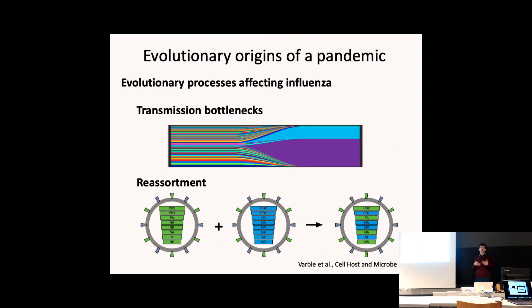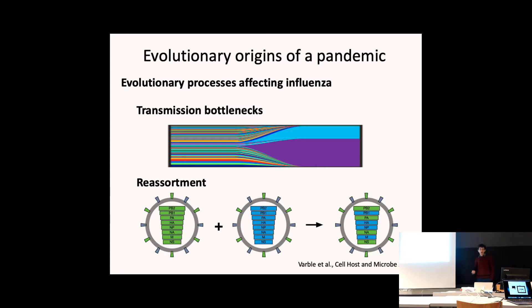Just like a human has chromosomes containing genetic information, the flu virus has eight segments of genome. If two different viruses get into the same cell, you can have reassortment, where segments from different viruses are shuffled and form new combinations to create a new and genetically different virus.